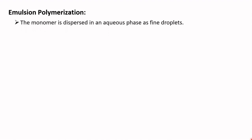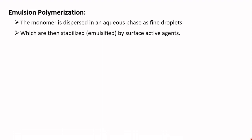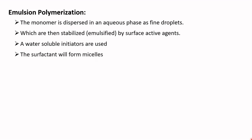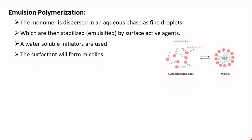The fourth technique is emulsion polymerization, the most widely used method. In this method, the monomer is dispersed in an aqueous phase as fine droplets, stabilized or emulsified by surface-active agents. The surfactants can be cationic or non-ionic, and water-soluble initiators are used. The surfactants lower surface tension at the monomer-water interface and facilitate emulsification. The surfactant molecules form micelles.